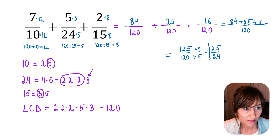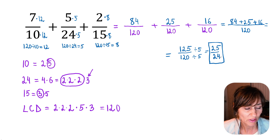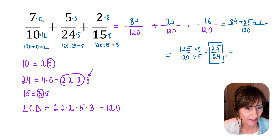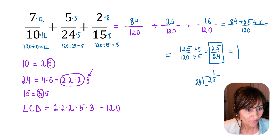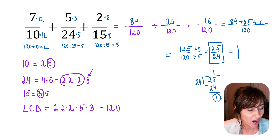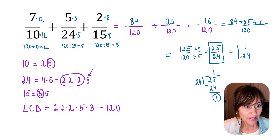This is the answer as an improper fraction — the numerator 25 is greater than the denominator 24. We can also write the answer as a mixed number. 25 divided by 24: 24 goes into 25 one time, so the whole number up front will be 1. The remainder is 25 minus 24, which is 1 — that's our new numerator. So 1 over 24. The answer as a mixed number is 1 and 1 over 24.